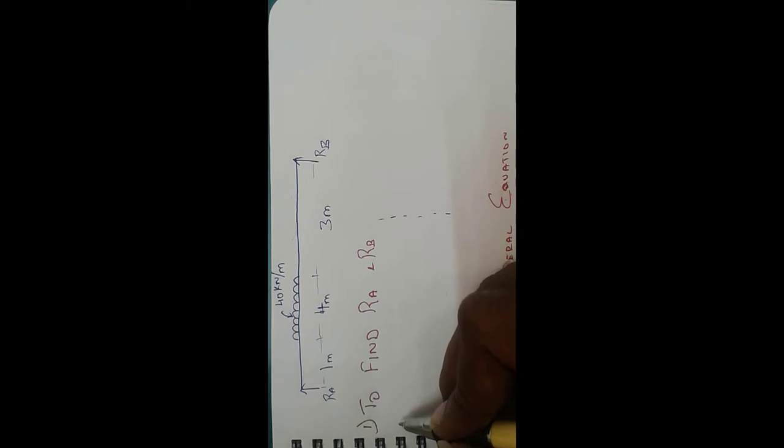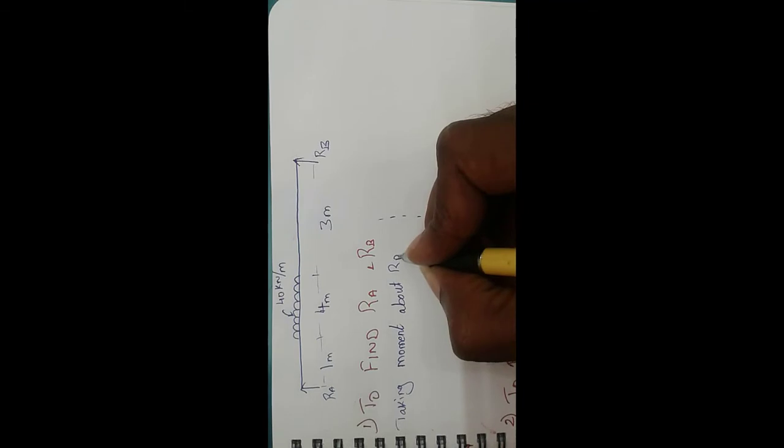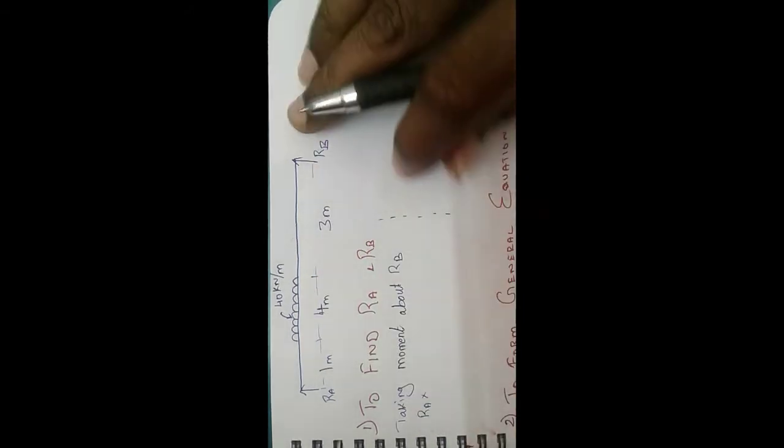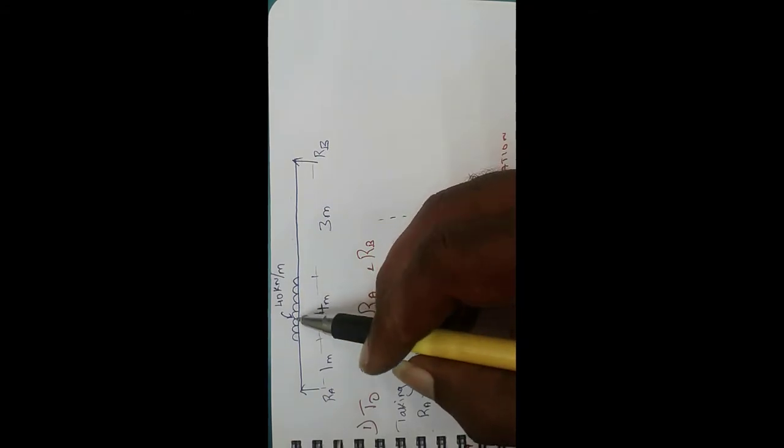The foremost first step is to find RA and RB. Taking moment about RB, we need to consider all the loads. The upward load is RA and the downward load is the partial UDL. So RA into the total distance A to RB, minus 40 into 4 (UDL converted to total load) acting at its midpoint — the reference distance to RB is 3 plus 2, totally 5 — which is equal to 0, since there are no loads on the other side of RB.